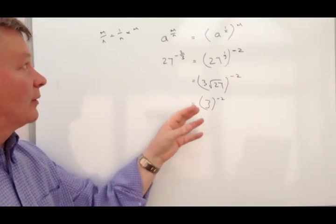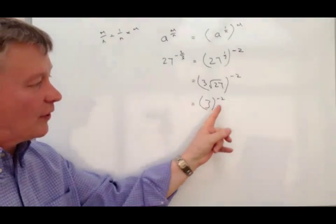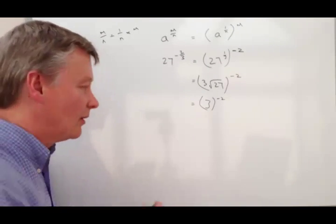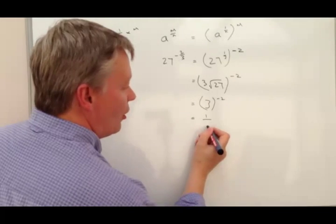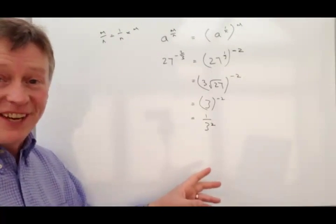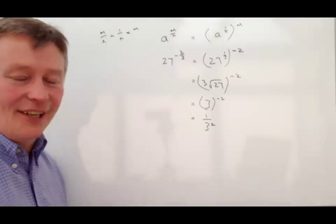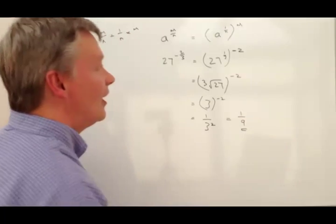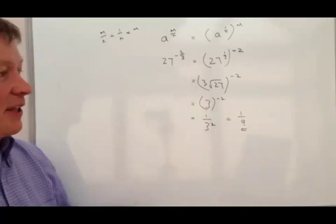Well again, if you look back at the previous video, when you've got to the power of minus 2, what we're going to do is make that into a reciprocal. So I've got 1 over 3 to the power of 2. 3 to the power of 2 is the same as saying 3 times 3 which is the same as saying 1 over 9, and that will answer this particular question.